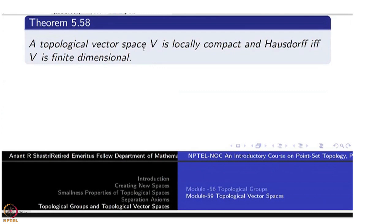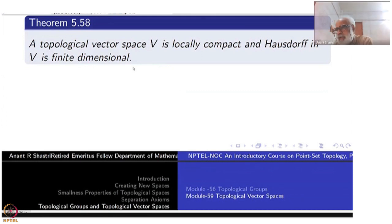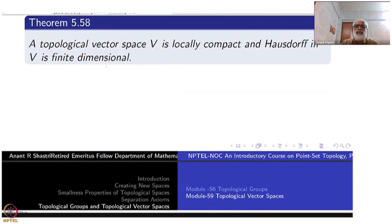The expected theorem is that every locally compact Hausdorff topological vector space is finite-dimensional. The converse we have already proved: any finite-dimensional vector space is isomorphic to K^n, hence a homeomorphism, and therefore locally compact. So we need to prove that local compactness implies finite-dimensionality.